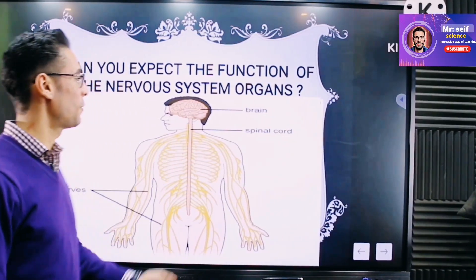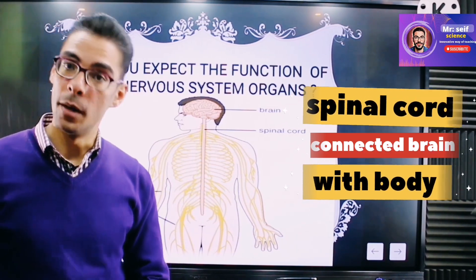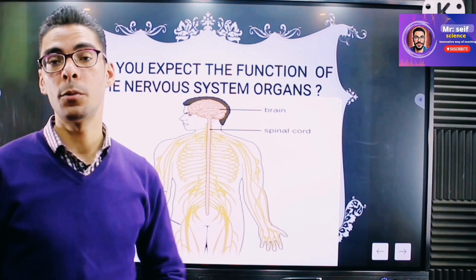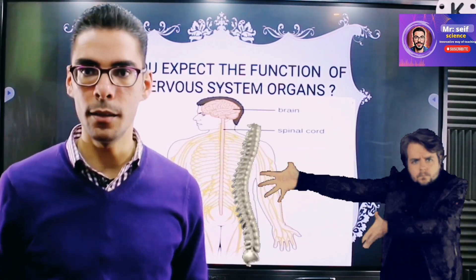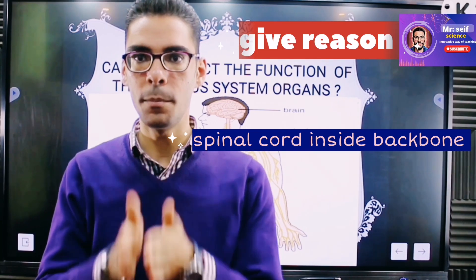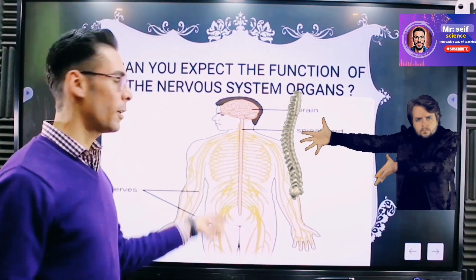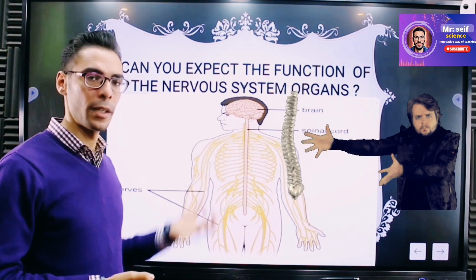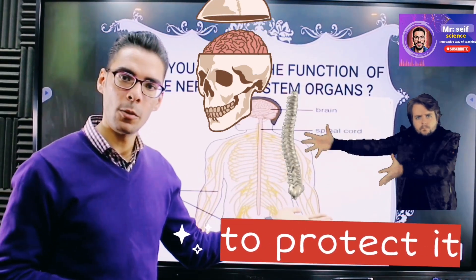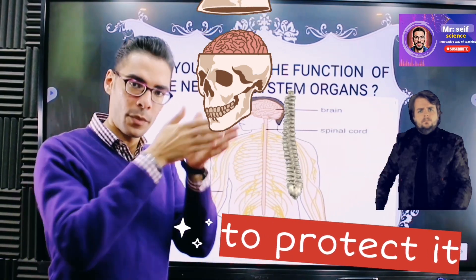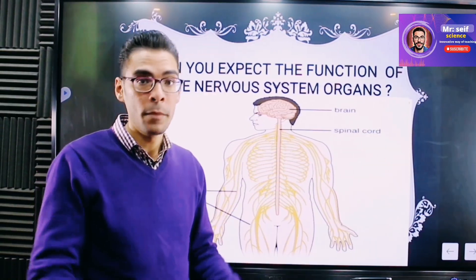The second organ is the spinal cord. It acts like a connection between the brain and the other body organs. Where is the spinal cord located? It's inside the backbone. But why? The spinal cord passes within the backbone — the bone is hard, maybe for protection. Yes! The spinal cord is a very sensitive organ, like the brain. So the brain is covered by the bones of the skull to protect it, and similarly the spinal cord passes inside the backbone to be protected from anything that could happen.